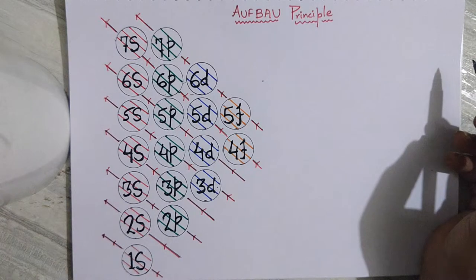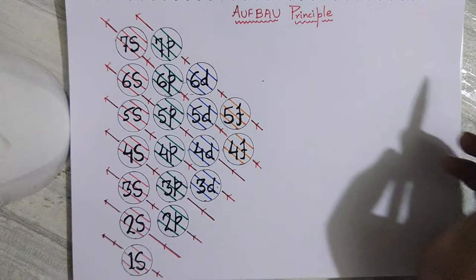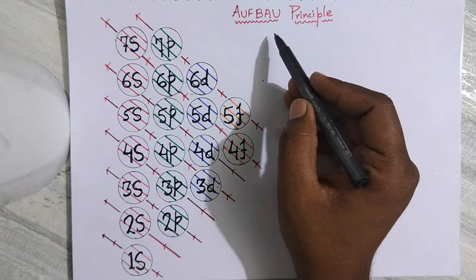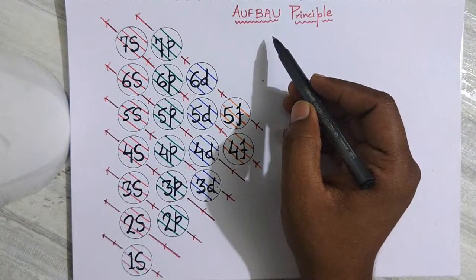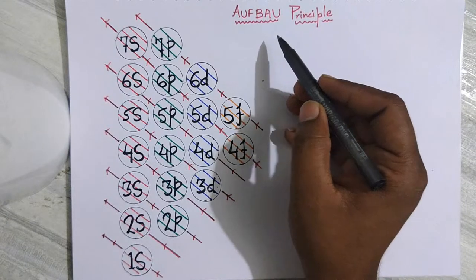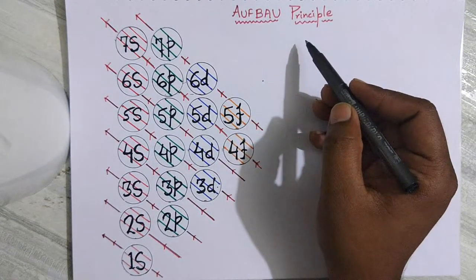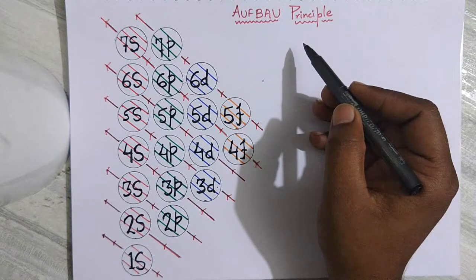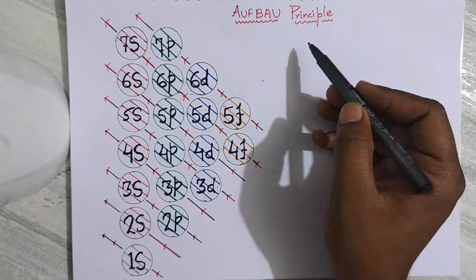Hello students, welcome to Game Shastra and welcome to the world of chemistry. Today we are going to discuss the Aufbau principle. Now what is the Aufbau principle? Aufbau is a German word which means 'building up,' and basically the Aufbau principle is about how to fill up the electrons in the orbitals. It's a very simple rule that you can follow.